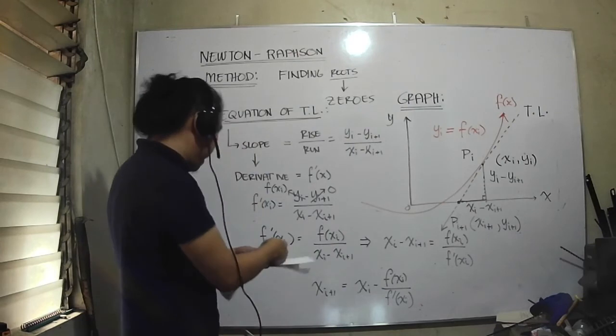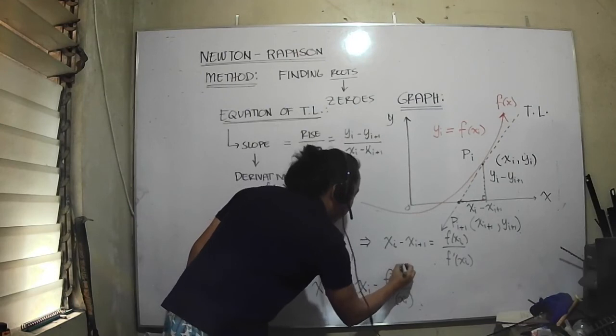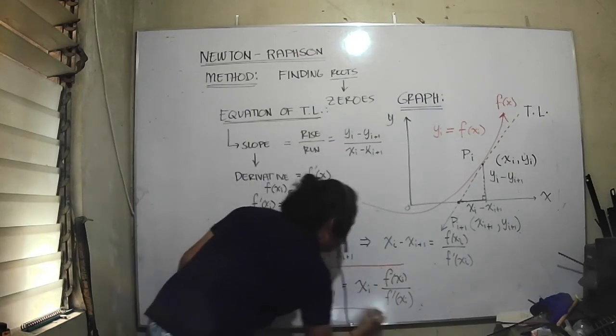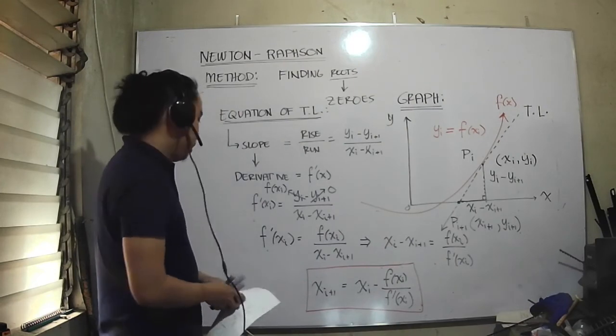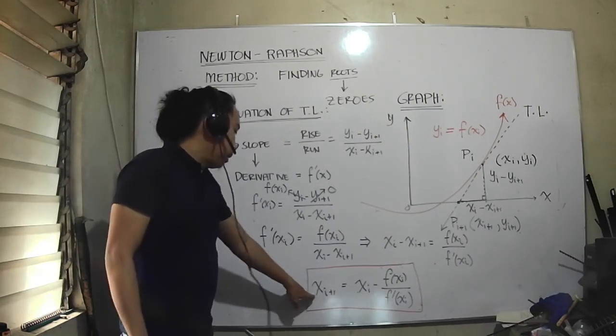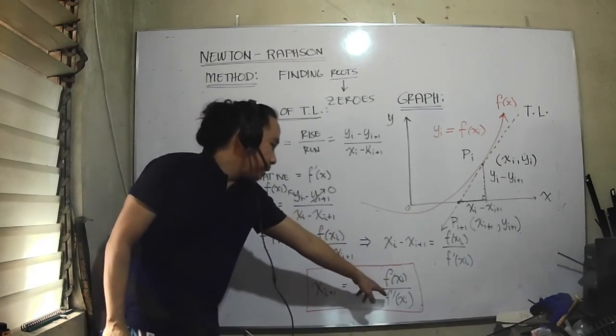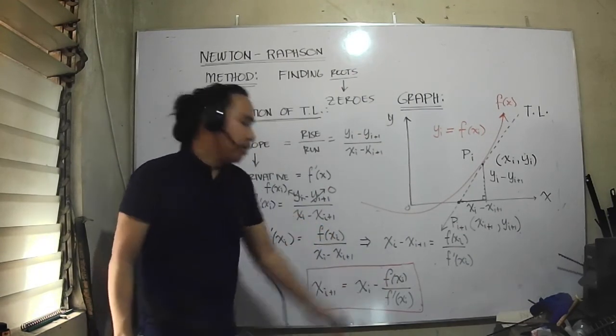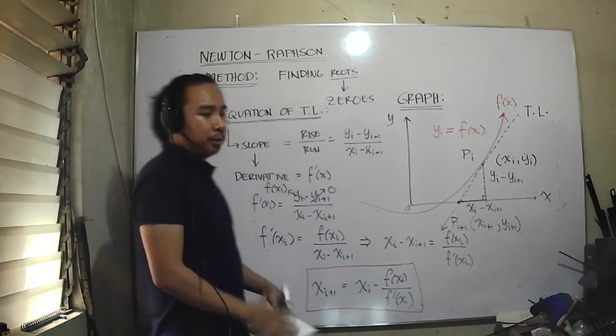Sorry for the limited space in the room. So xi+1 equals xi minus f of xi divided by f prime of xi. This is our Newton-Raphson formula.